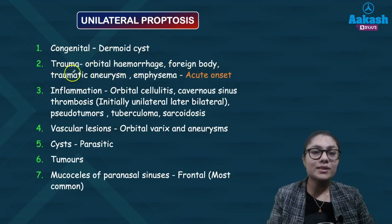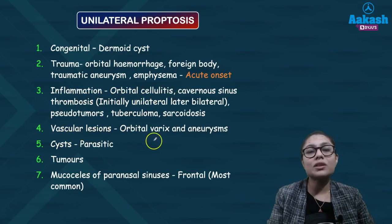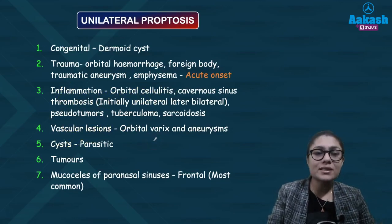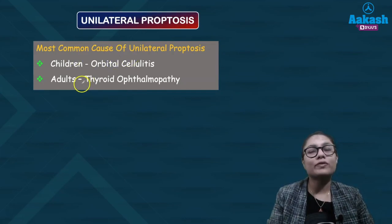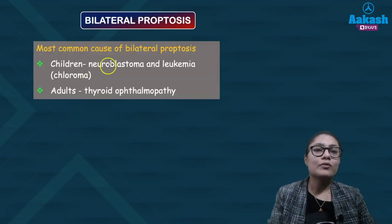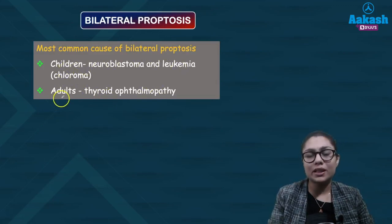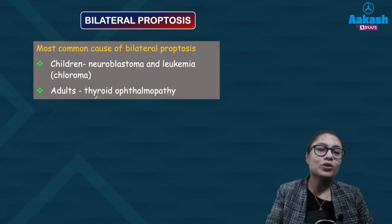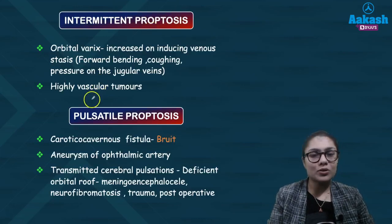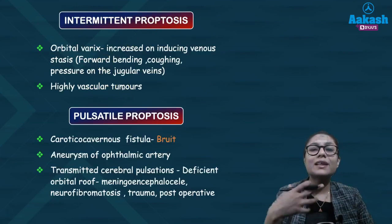Causes of unilateral proptosis include congenital dermoid cyst, acute onset post-trauma, inflammation like orbital cellulitis or cavernous sinus thrombosis, vascular lesions like orbital varices, parasitic cysts, tumors, or mucocele of paranasal sinuses. The most common cause of unilateral proptosis in adults is thyroid ophthalmopathy, while in children it is orbital cellulitis. The most common cause of bilateral proptosis in adults is thyroid ophthalmopathy, and in children it is neuroblastoma and leukemia, that is chloroma.